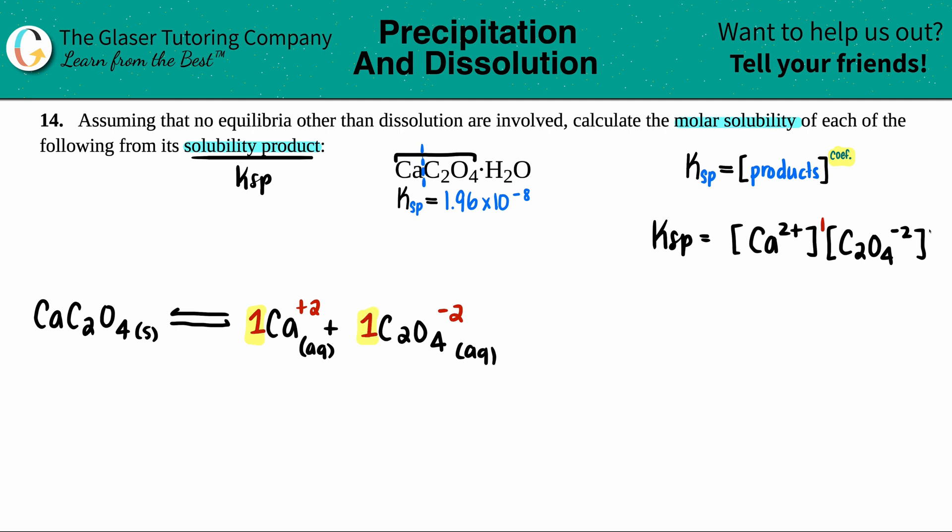I could raise them both to the first power, but anything raised to the first is itself. So I don't even care about that. The Ksp we took from the back of the book is 1.96 times 10 to the negative eighth. But the thing is that I don't know what these concentrations are.